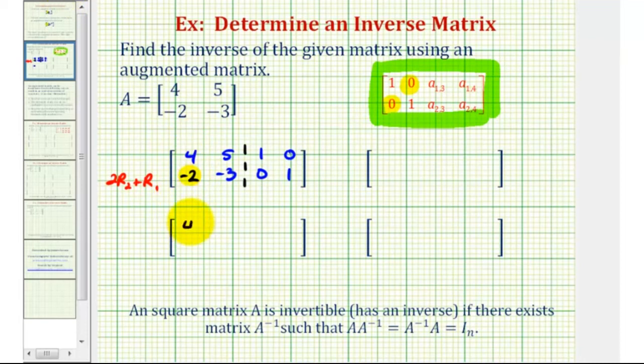So the first row will stay the same. And now for row 2 we'll have 2 times negative 2 plus 4, that's 0. 2 times negative 3 is negative 6 plus 5, that's negative 1. 2 times 0 is 0 plus 1 is 1. And 2 times 1 is 2 plus 0, that would be 2.